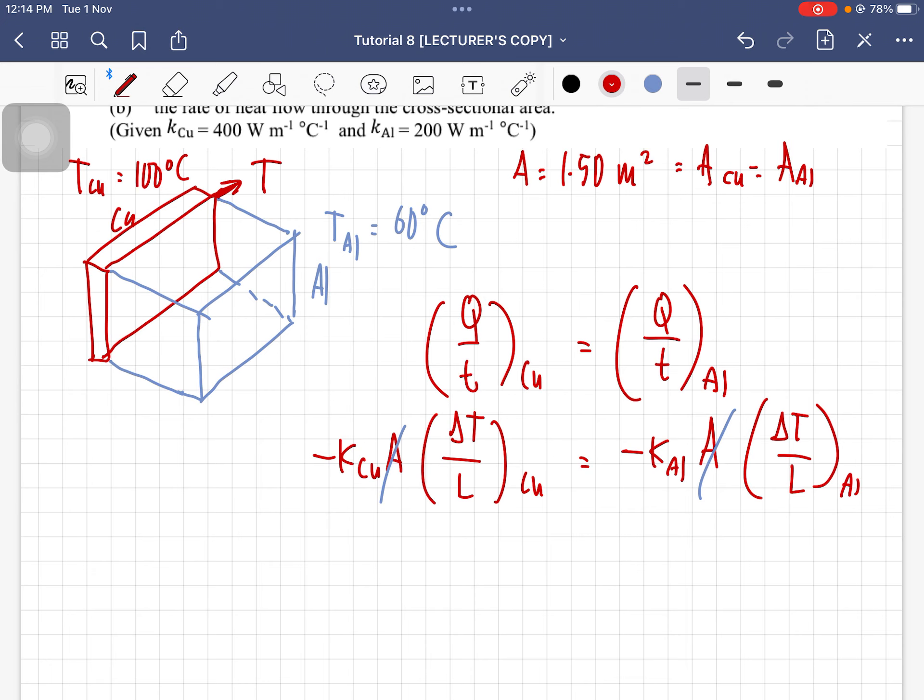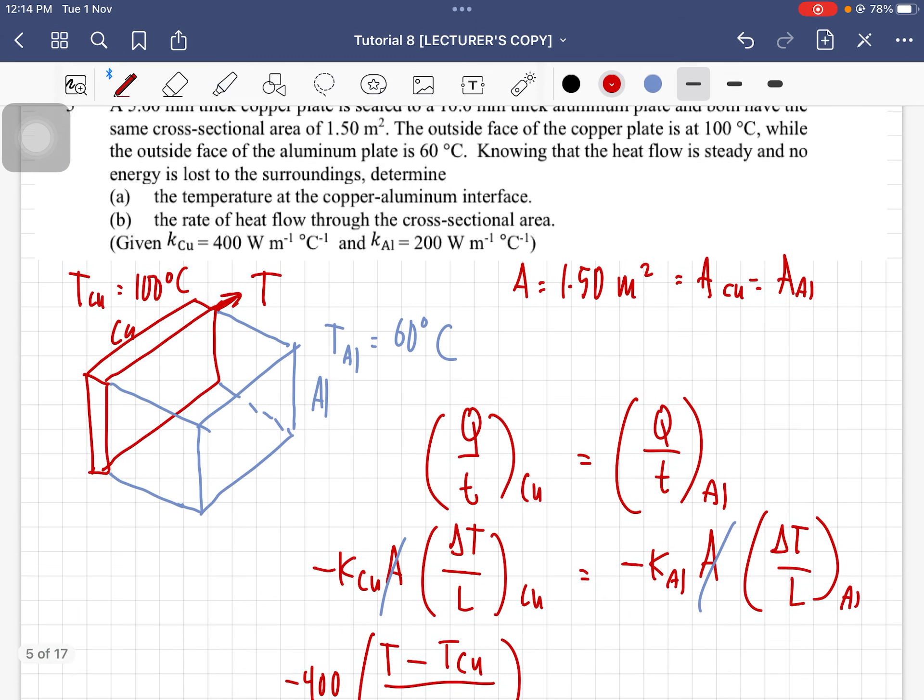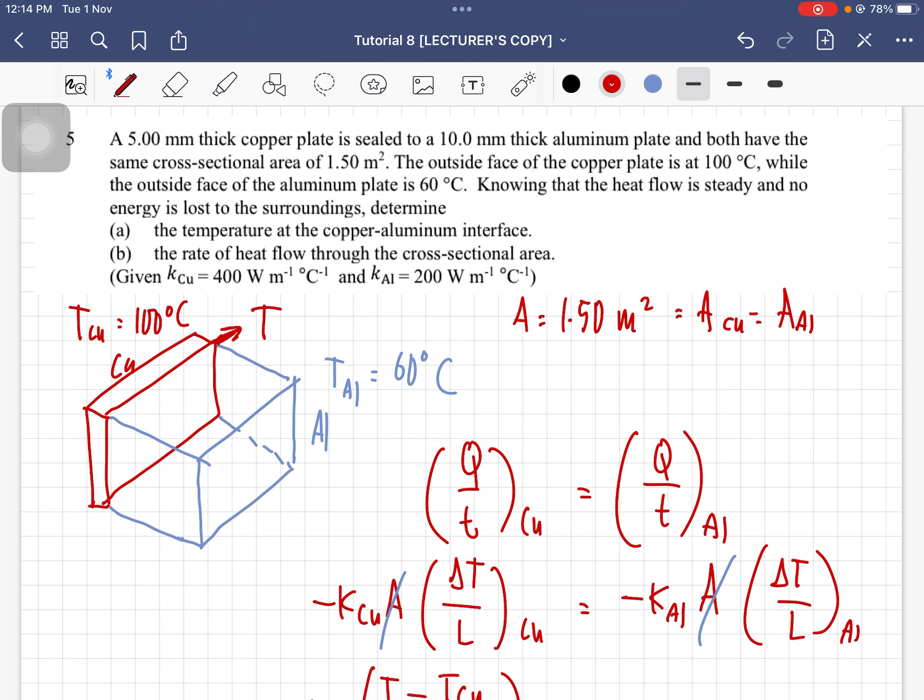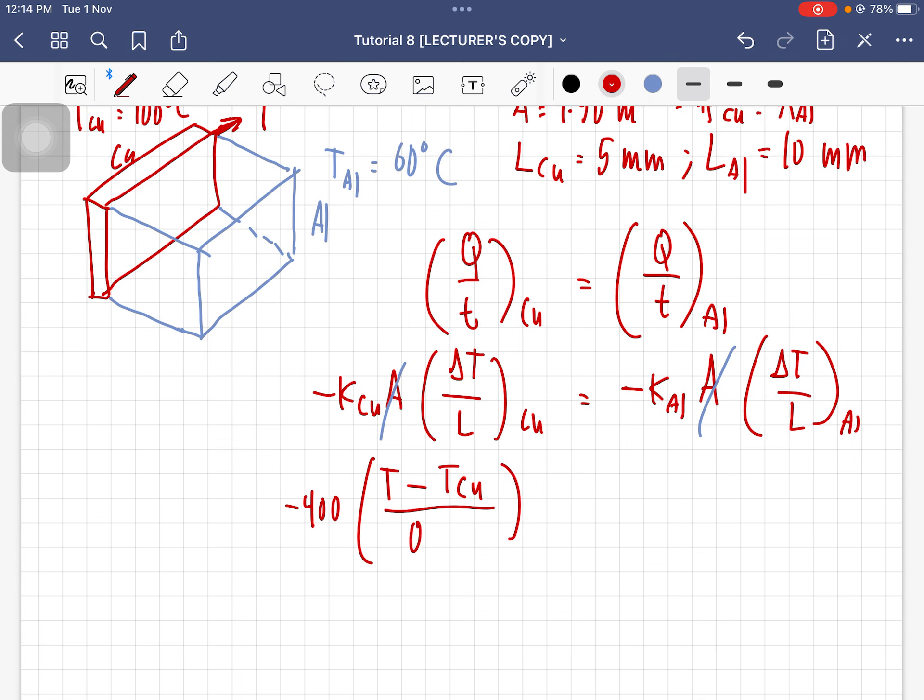Copper's thermal conductivity is given as 400, so negative 400, and then delta T is the temperature at the interface minus temperature of the outside surface of the copper material, over the L, which is 0.005, equal to negative 200, and then outside temperature of aluminum minus the inside, and then this is 0.01, this is for aluminum.